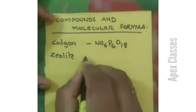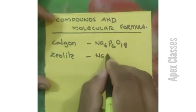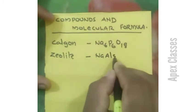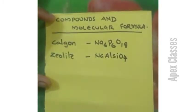Zeolite. The formula for Zeolite is NaAlSiO4.